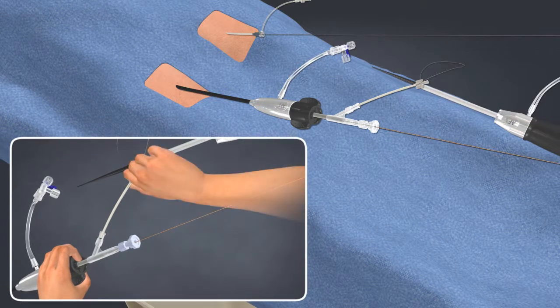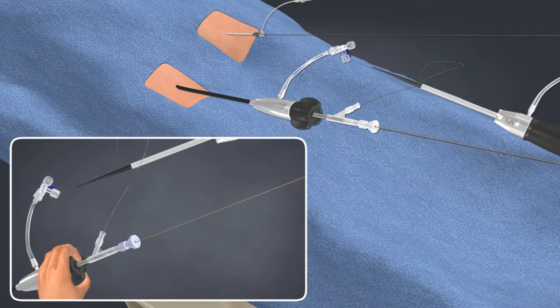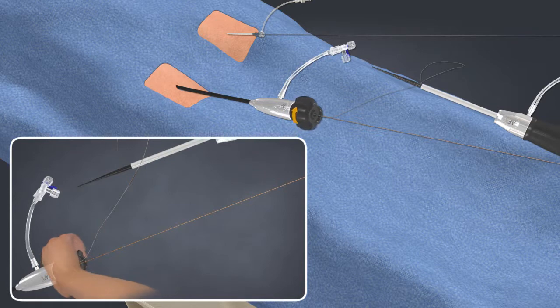Keeping tension on the wire from the contralateral side, peel away the contralateral limb wire from the dilator and remove the dilator. Upon removal, tighten the hemostasis valve.